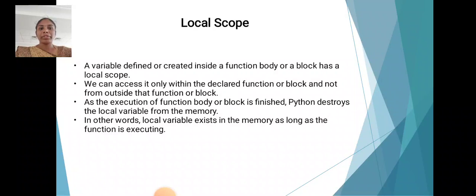Local scope: a variable defined or created inside a function body or block has a local scope. We can access it only within the declaration function or block, and not from outside that function or block. As the execution of function body or block is finished, Python destroys the local variable from memory. In other words, local variables exist in memory as long as the function is executing.